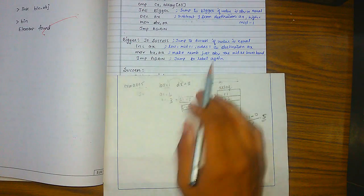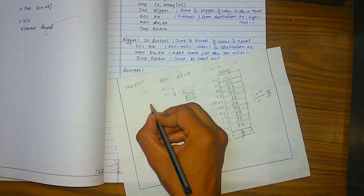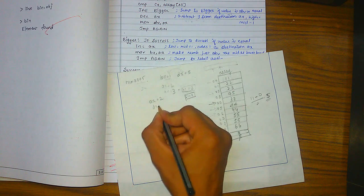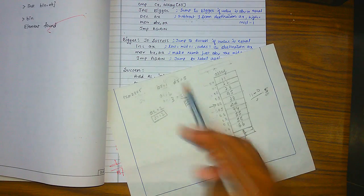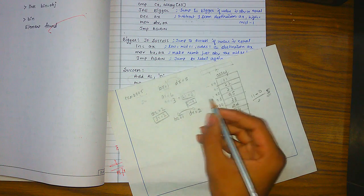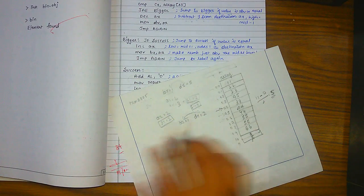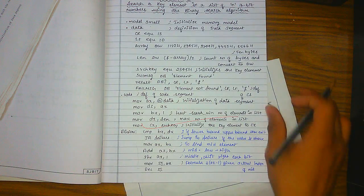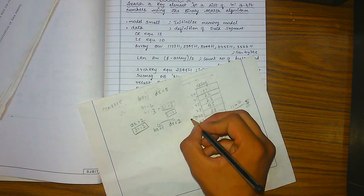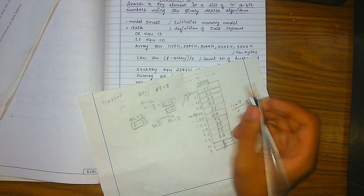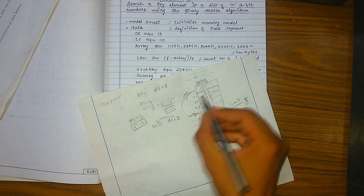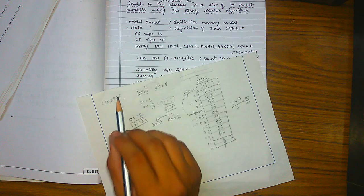If equal, it moves to success and displays the success message. Otherwise, if lesser, dx is decremented — dx becomes 2. Then we jump again to the top of the loop. Now bx equals 1 and dx equals 2, which is not greater, so failure still won't execute. The next middle position is recalculated and a new index value is checked.